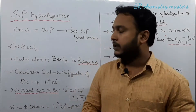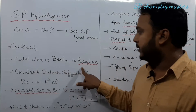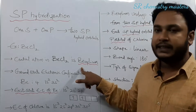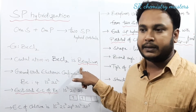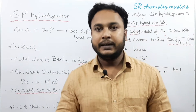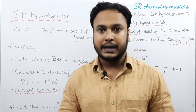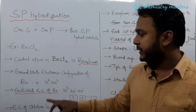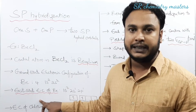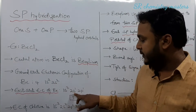In BeCl₂, the central atom is beryllium. The electronic configuration of beryllium is 1s²2s². We require unpaired electrons in order to form a bond, so beryllium undergoes excitation and its electronic configuration gets converted from 1s²2s² to 1s²2s¹2p¹.